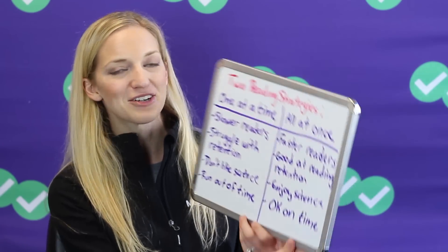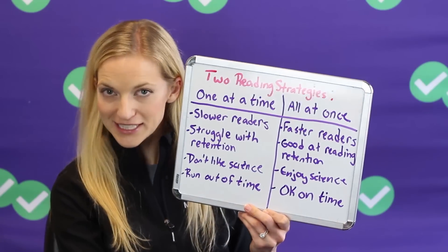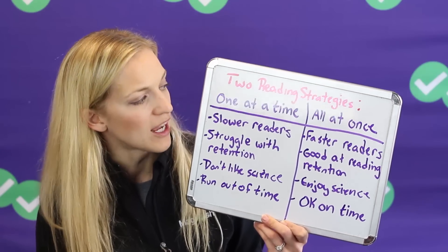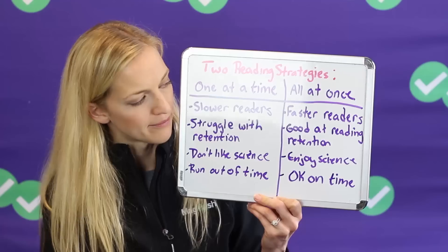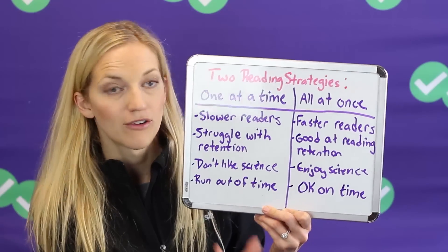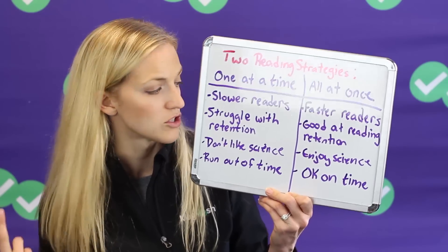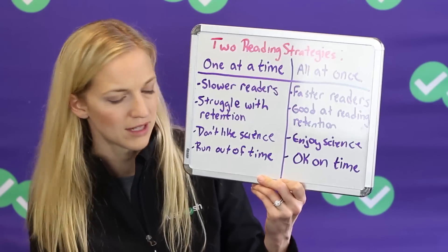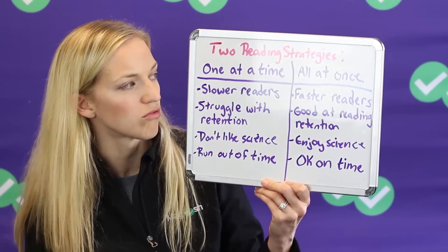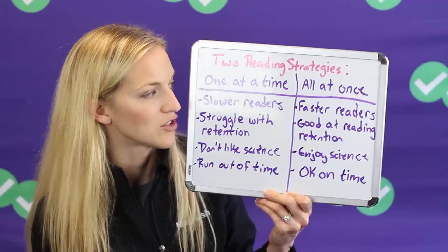Now let's talk about reading strategies. There are two basic reading strategies you can employ when dealing with the conflicting viewpoints passage. You can either read them all one at a time or read them all at once. If you feel like you're a slower reader, you struggle with retaining what you read, you tune out reading about science, or you tend to run out of time, you might like to choose the one-at-a-time reading strategy.